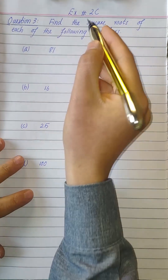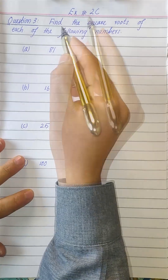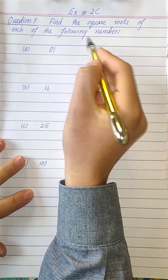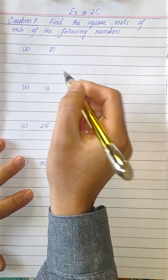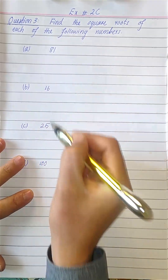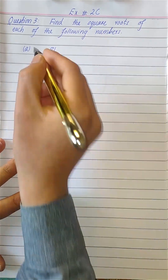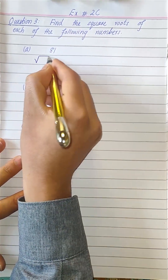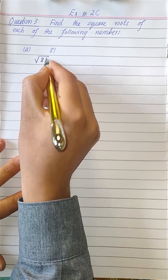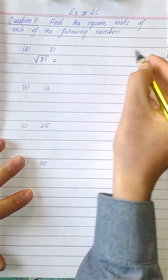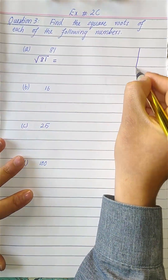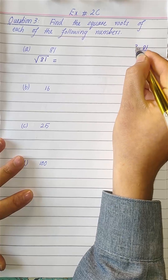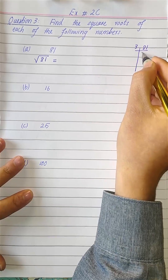Question number three from exercise 2C: find the square roots of each of the following numbers. In part A we have 81, so we need to find the square root of 81. To do this, we factorize 81 — it can be divided using the table of 3.